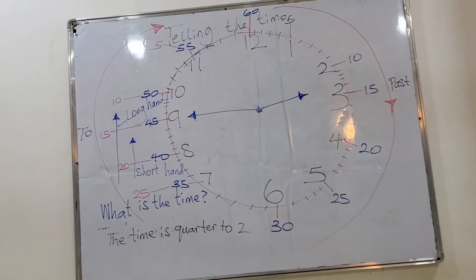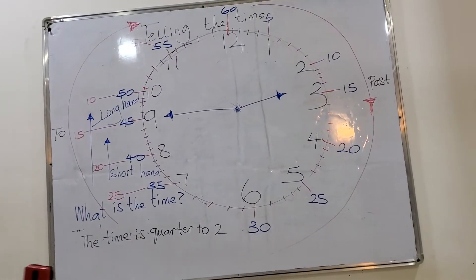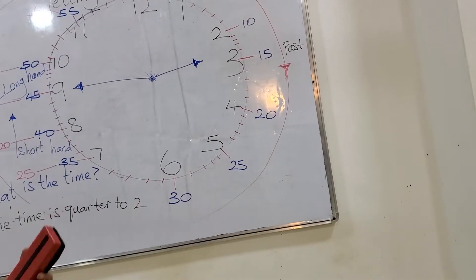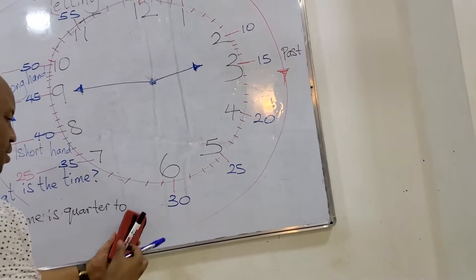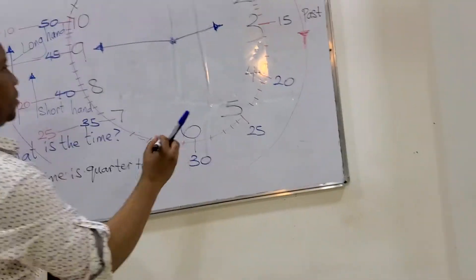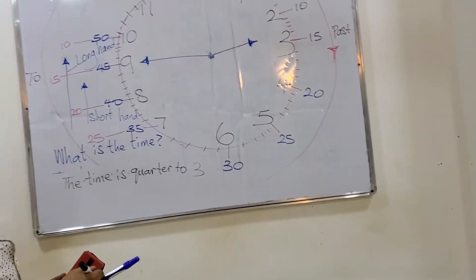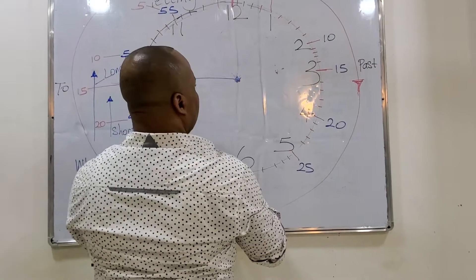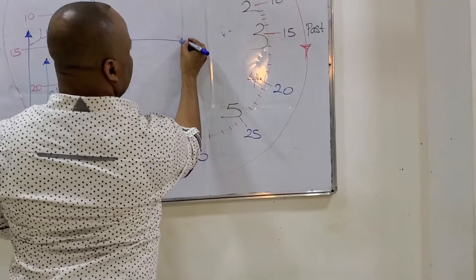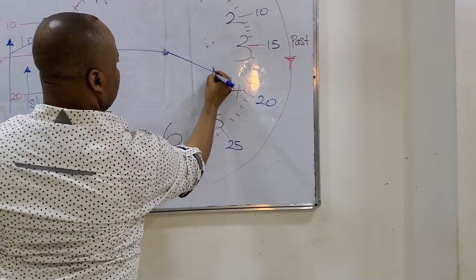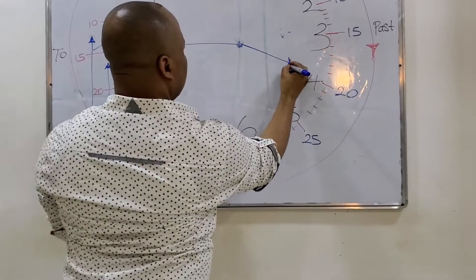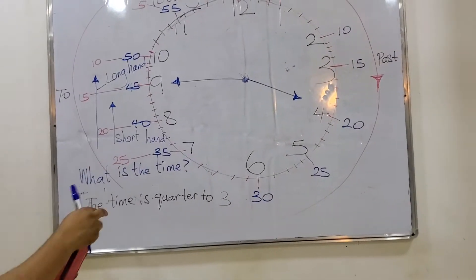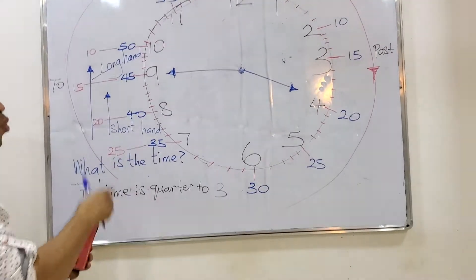What is the time? The time is quarter to three. What is the time? The time is quarter to four.